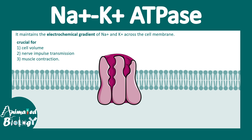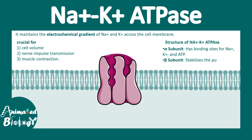The structure of sodium potassium ATPase includes two subunits: the alpha subunit, which has the binding site for sodium and potassium ions and ATP, and the beta subunit, which stabilizes the pump within the cell membrane.